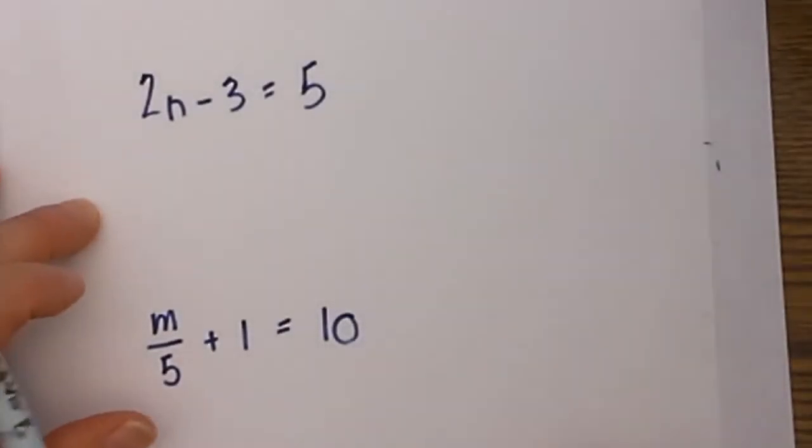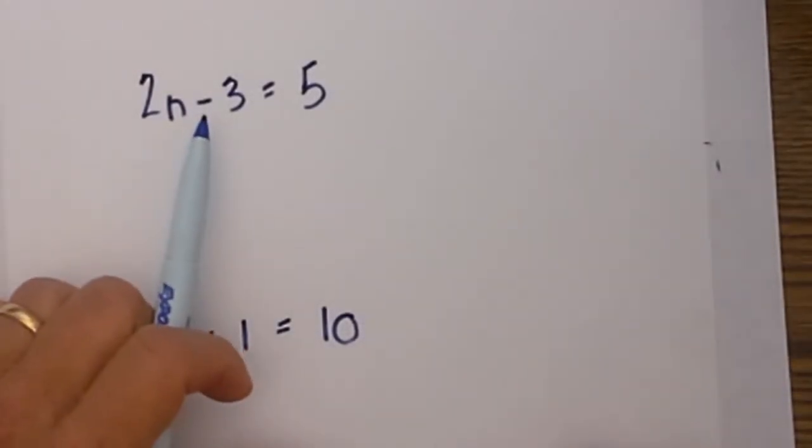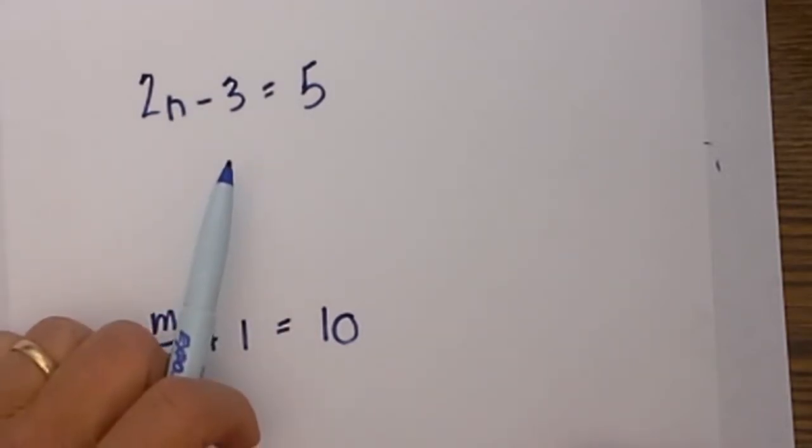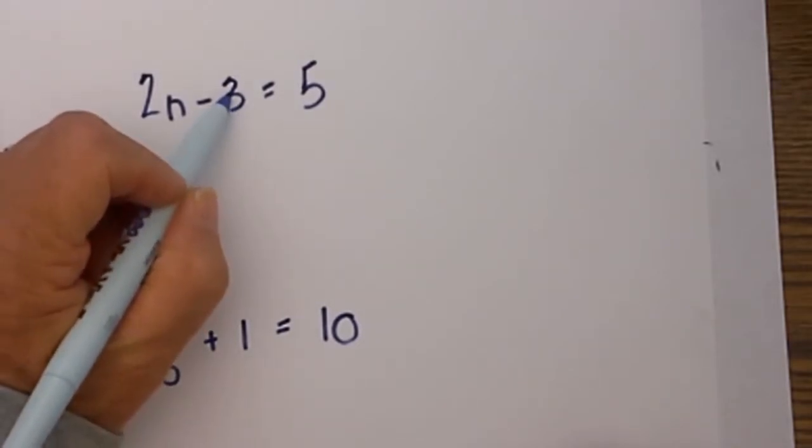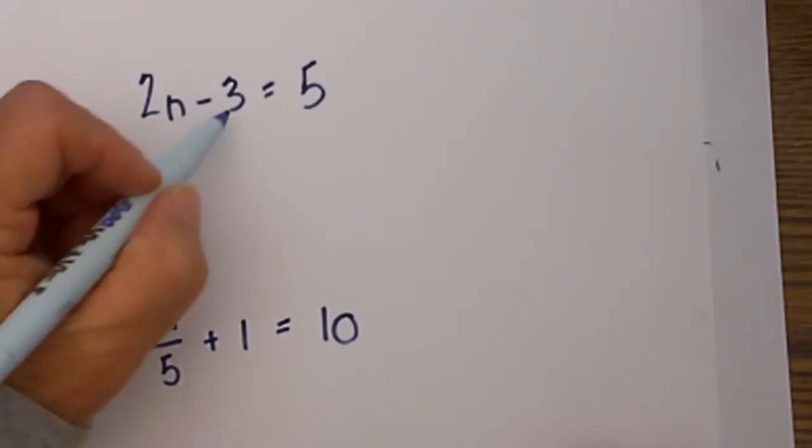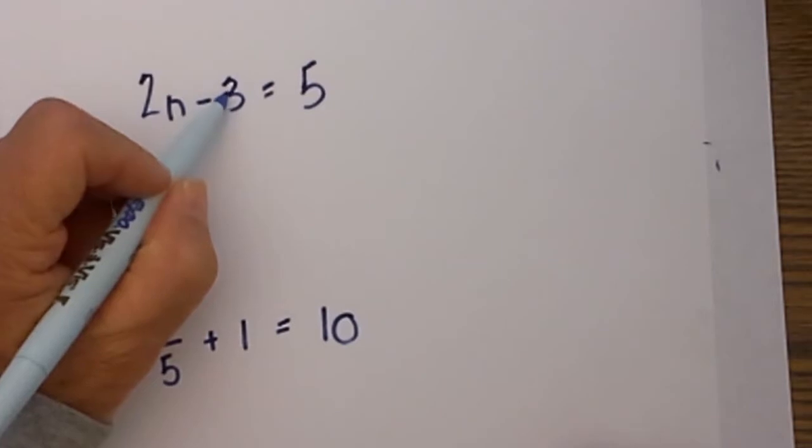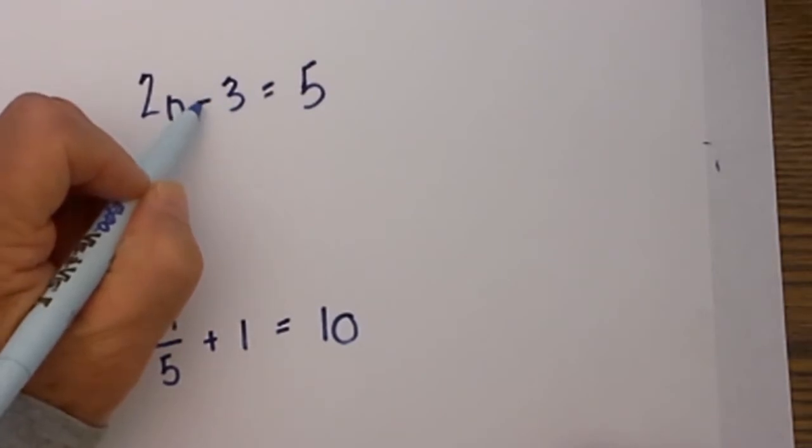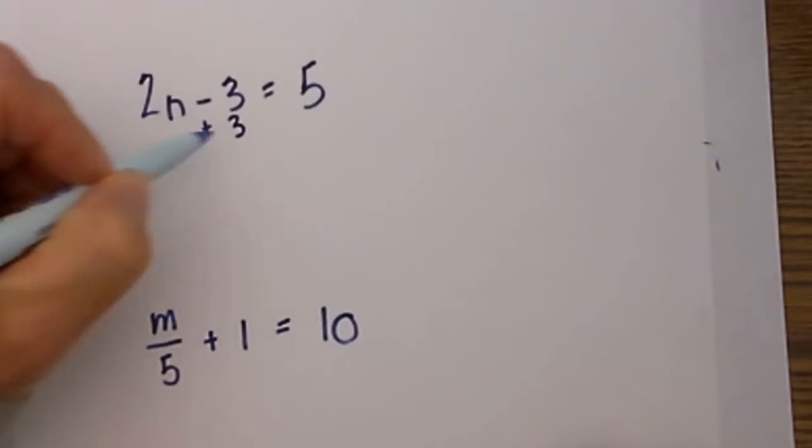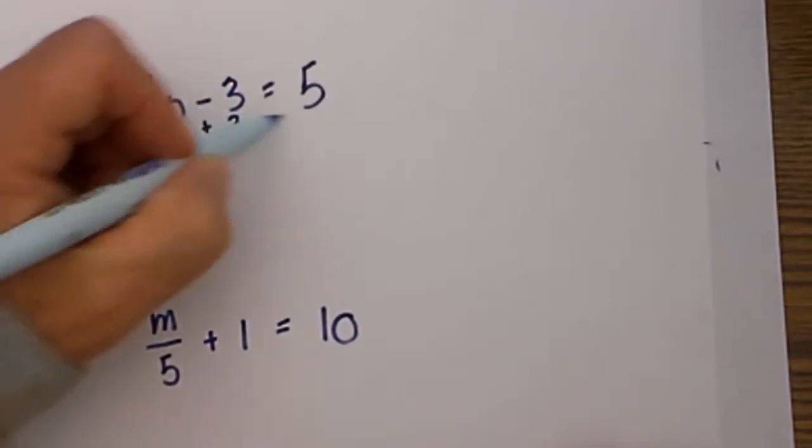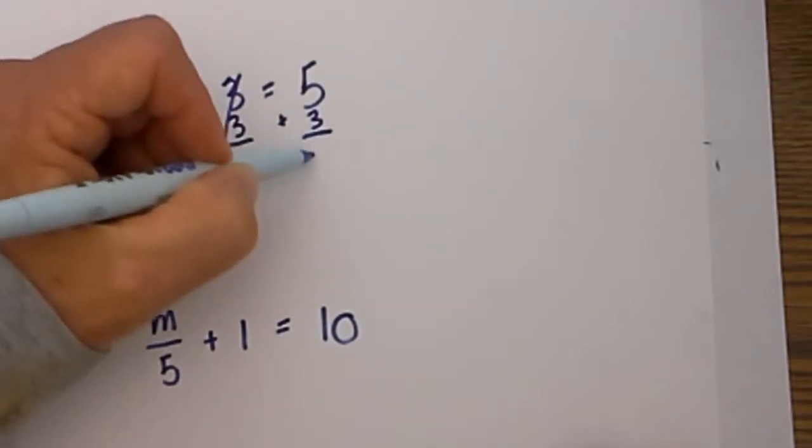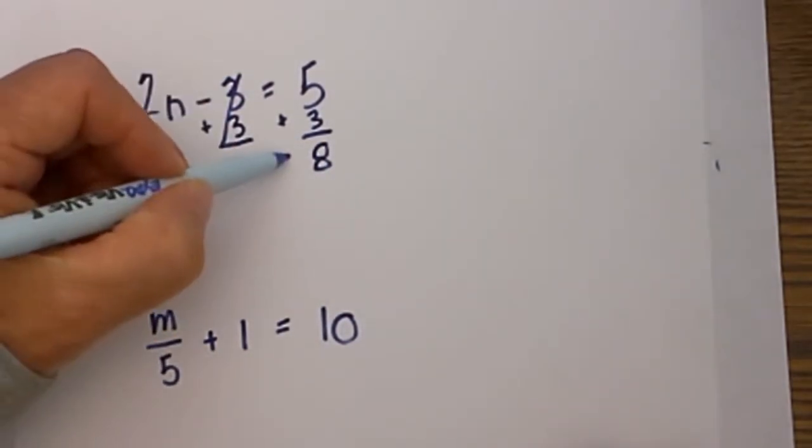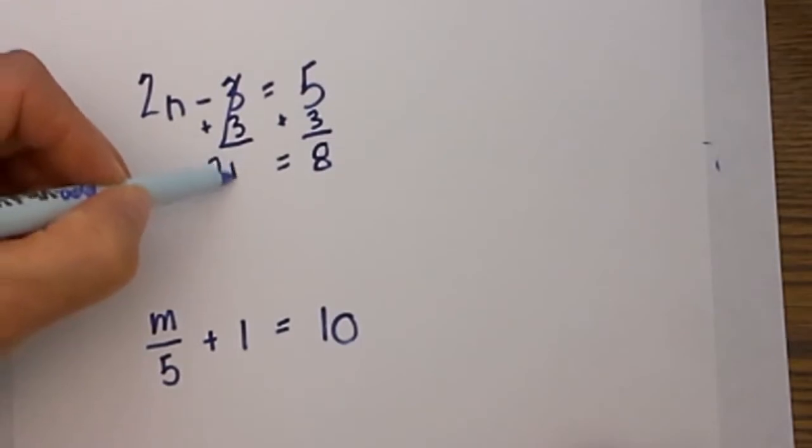Let's go ahead and solve some two-step equations. Step one or goal one is to get the variable isolated by itself and then a one in front of it. So in order to isolate this variable we need to get rid of the three, so we will undo the subtraction with addition. We will add three, and remember what you do to one side you must do to the other. So we are left, these cancel, and this becomes 8 equals 2n.